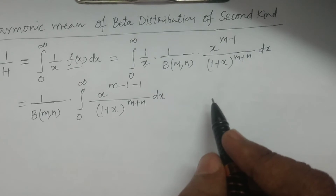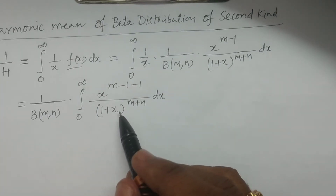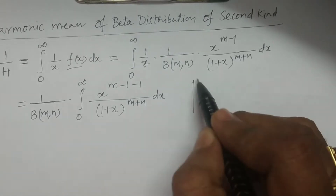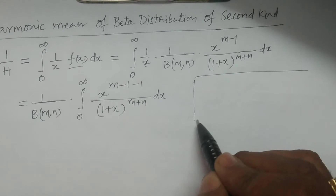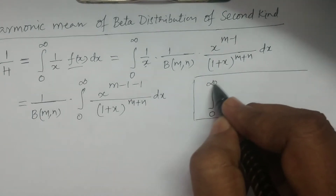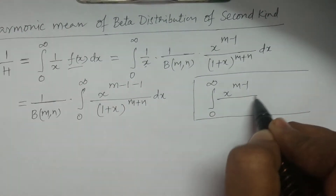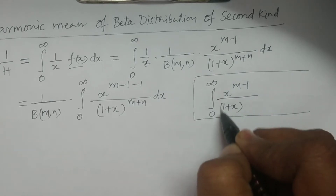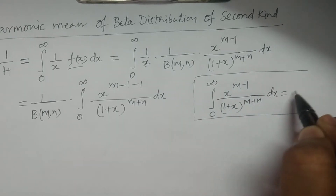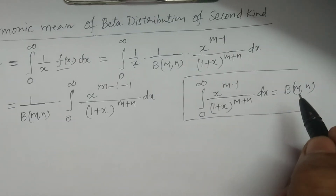To resolve this integrand, we use the beta distribution of second kind integral formula: integral from 0 to infinity of x power m minus 1 divided by 1 plus x whole power m plus n dx is equal to beta(m, n).